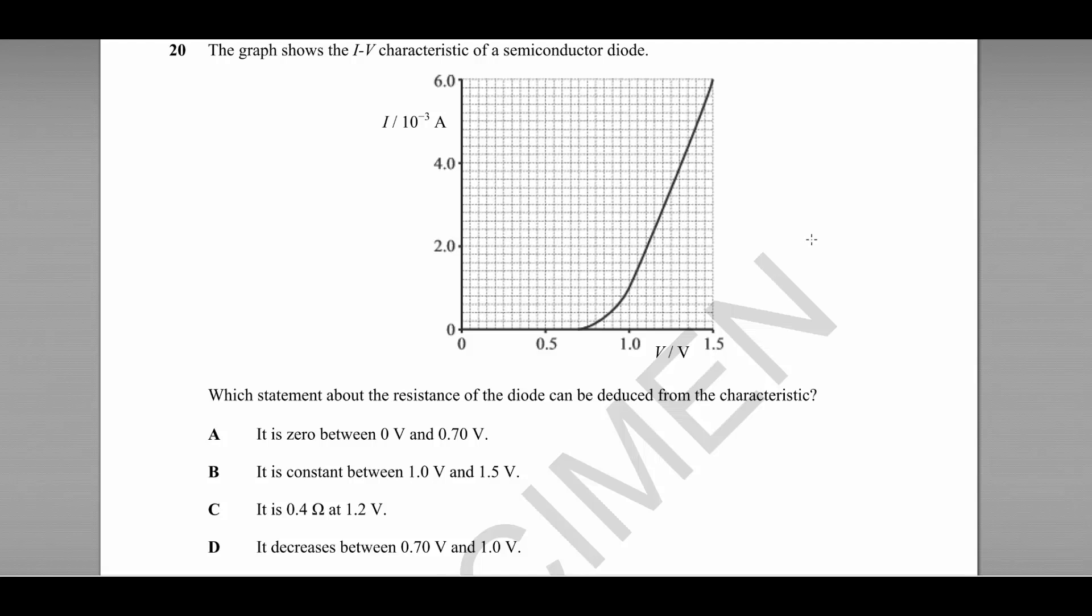Question number 20 is about the IV characteristic of a diode. Which of these statements about the resistance of the diode is correct? First, statement A: the resistance is zero between 0 and 0.7 volts. Well, that's this section of the graph here. Resistance is V divided by I, so here we have a change in voltage